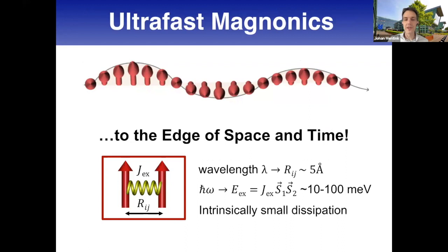We call it the edge of space and time in magnetism, where you're looking at the smallest possible length scale. The wavelengths of these magnons are just approaching the distance between two spins, and these magnons have an energy scale of the exchange interaction, typically between 10 and 100 millielectron volts. Because of this wave nature, propagation can be very fast with very little energy dissipation.